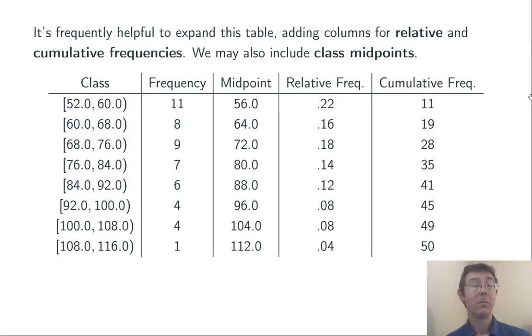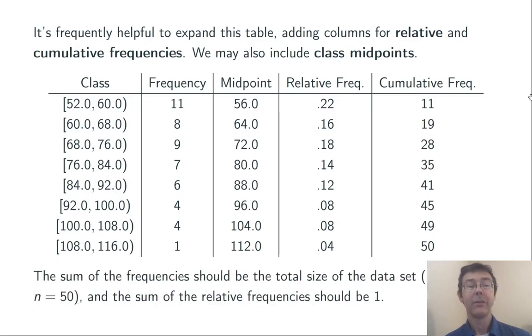That's 11 plus 8, the two classes that came before. Then 28, we add 19 plus 9. 35 is 28 plus 7, and so on.